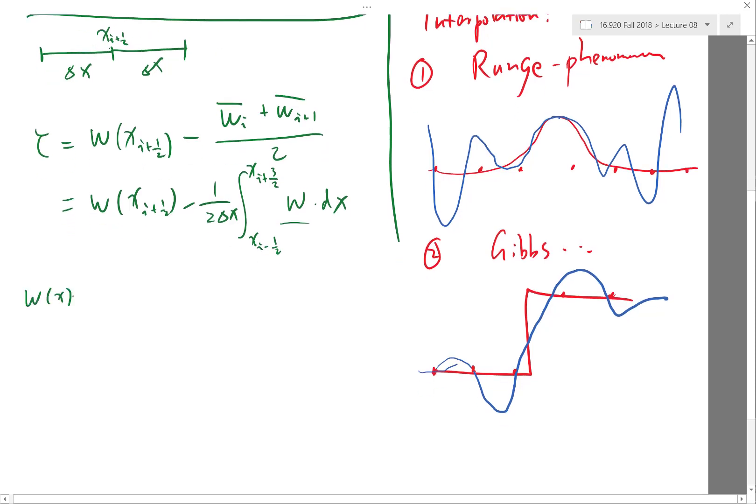So w at any x can be actually expanded around this point, is w of x_i+1/2, plus whatever x minus this x_i+1/2 is, times ∂w/∂x at x_i+1/2. Okay, and then the higher order terms are the same, plus half square, second order derivative, also at x_i+1/2 plus et cetera.